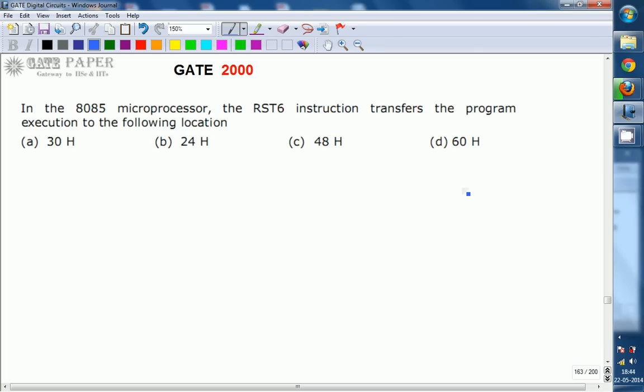Hello, we are discussing Gate 2000 ECE paper, and the topic is related to microprocessor. In the 8085 microprocessor, the RST6 instruction transfers the program execution to the following location.